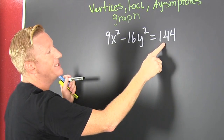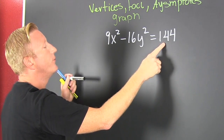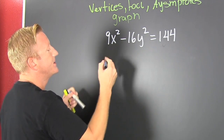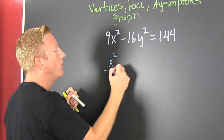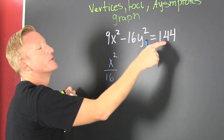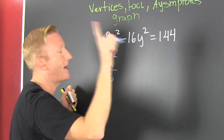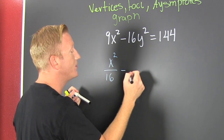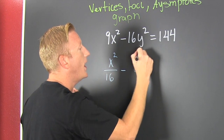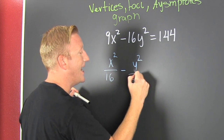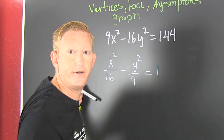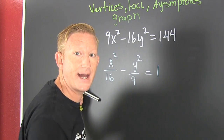So then I go and I divide everything by 144. And when I do, I get x squared over 16. Books like to use multiples of those — I don't know why, but it makes nice numbers. So that's y squared over 9, and that's going to be equal to 1.